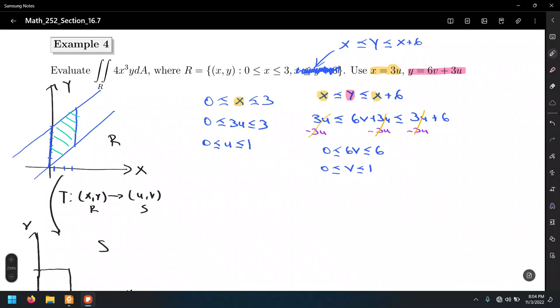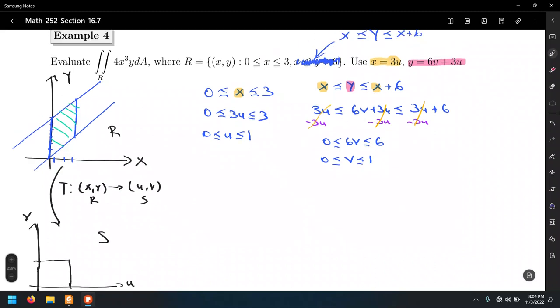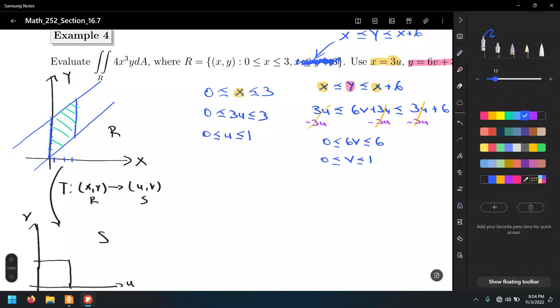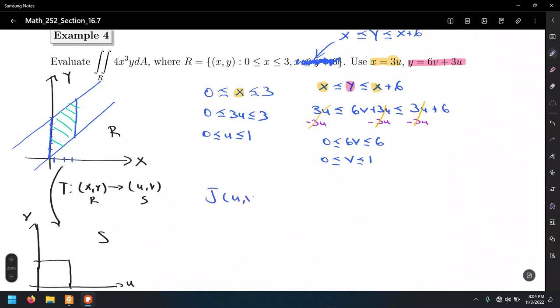What else do we need to do? We need to find the Jacobian. For the Jacobian J of u, v, that's the partial derivative of x with respect to u. For the first row, the partial of x with respect to v. For the second row, it's the partial of y with respect to u, and the partial of y with respect to v.